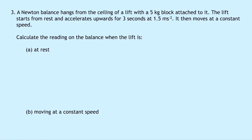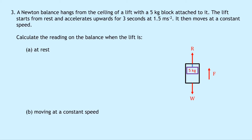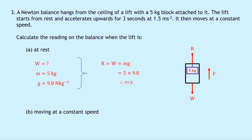Question three: a newton balance hangs from the ceiling of a lift with a 5kg block attached to it. The lift starts from rest and accelerates upwards for 3 seconds at 1.5 m/s². It then moves at constant speed. Part A asks for the reading when the lift is at rest. Drawing the free body diagram with reaction force R upward and weight W downward, at rest we have balanced forces, so R equals W equals mg. Substituting: 5 times 9.8 equals 49 newtons.